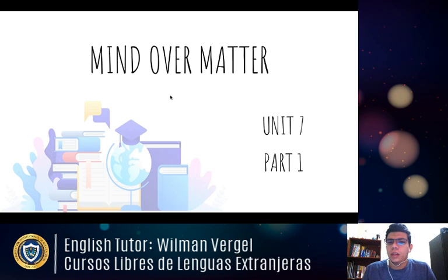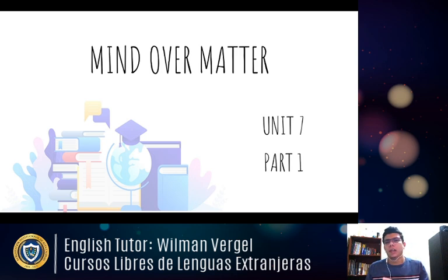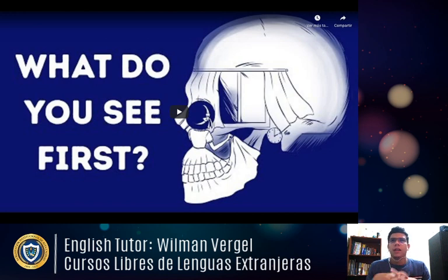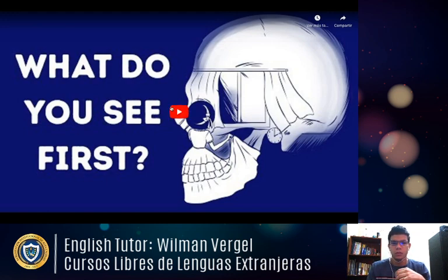The name of the unit is Mind Over Matter. It's unit number one, part one — grammar, vocabulary, and something about pronunciation. I'll have to make another video for the rest. So, we're going to start with a video. I'm going to show you a video about illusions. You're going to see some features and think about what you can see first, and then it'll show you your personality based on what you see.